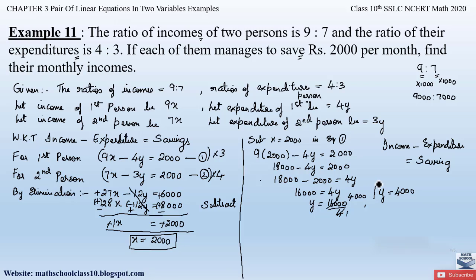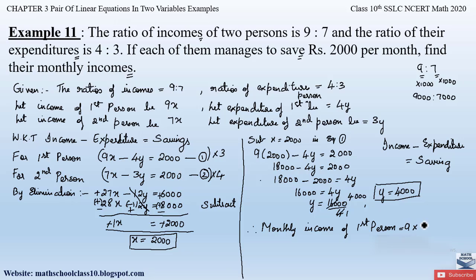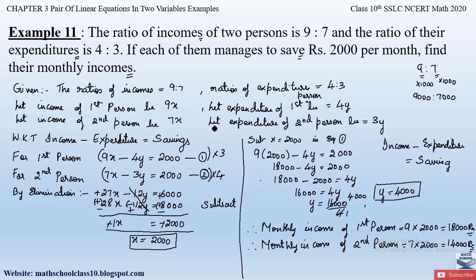This is not the final answer — we must find the actual monthly incomes. The monthly income of the first person is 9x equals 9 into 2000 equals rupees 18000. The monthly income of the second person is 7x equals 7 into 2000 equals rupees 14000. If they had asked for expenditures, we would multiply the y value of 4000 into 4y and 3y respectively.